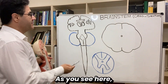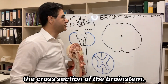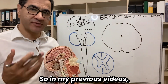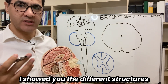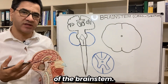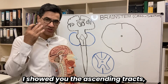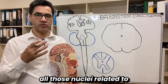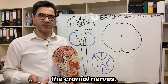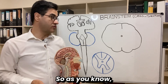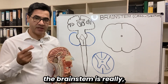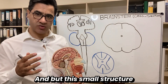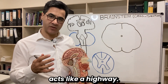Hello, I'm going to talk about the cross-section of the brain stem. In my previous videos I showed you the different structures of the brain stem — the ascending tracts, the descending tracts, and the nuclei related to the cranial nerves. As you know, the brain stem is really small, but this small structure acts like a highway.